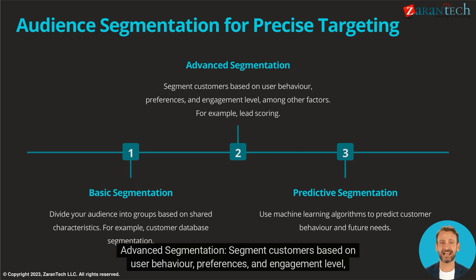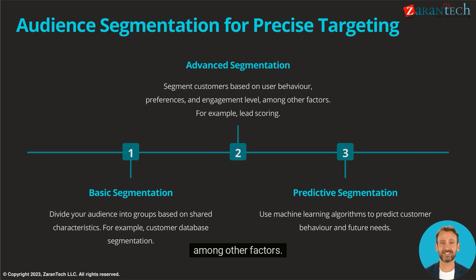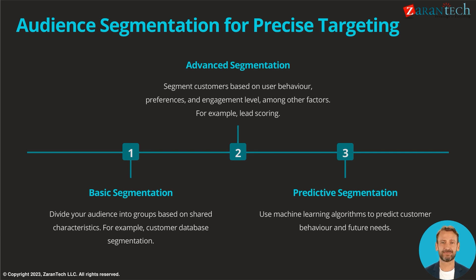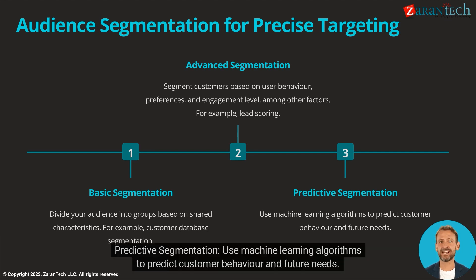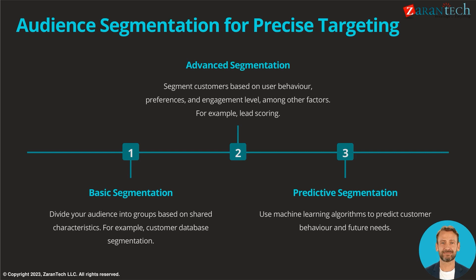Advanced Segmentation: Segment customers based on user behavior, preferences, and engagement level, among other factors — for example, lead scoring. Predictive Segmentation: Use machine learning algorithms to predict customer behavior and future needs.